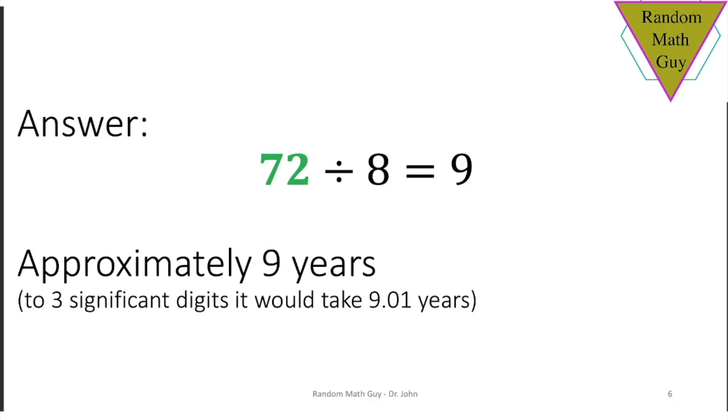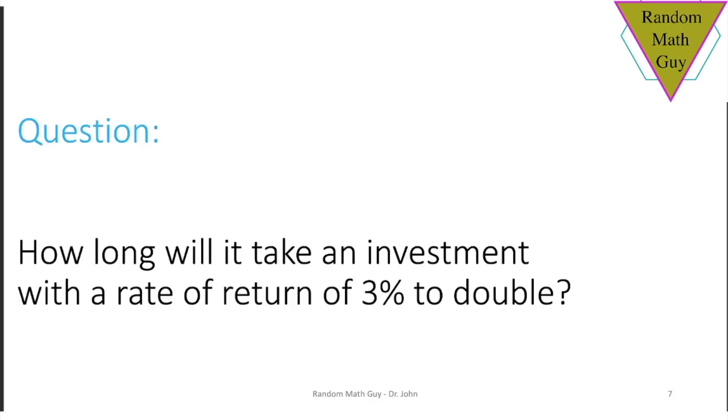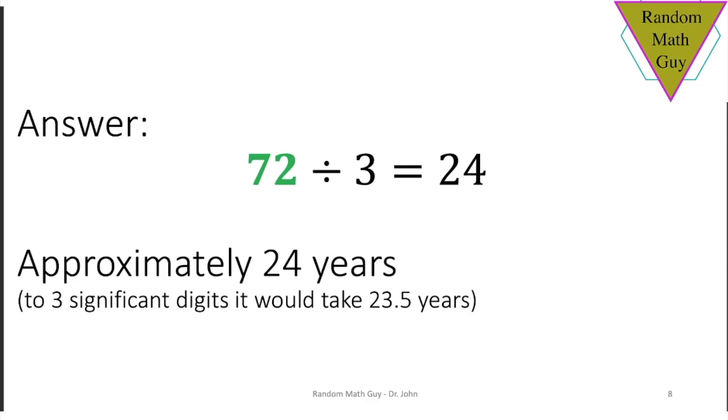Okay, what if you were investing something at 3%? How long would it take to double your money? Well, 72 divided by 3, can you do that in three seconds? I'm sure you can. The answer is 24. The more accurate answer is 23.5 years, but for three seconds of thinking, that's pretty damn close.